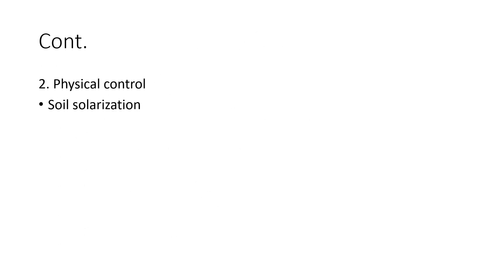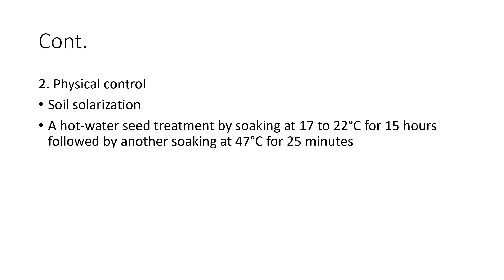Physical control: Soil solarization with a plastic sheet for a month before sowing is known to reduce the pathogen occurrences or disease development. Hot water seed treatment is also known to reduce disease occurrence. This is done by soaking seeds at 17 to 22 degrees Celsius for 15 hours, followed by another soaking at 47 degrees Celsius for 25 minutes. However, a skilled person should administer this technique so that seeds are not killed.